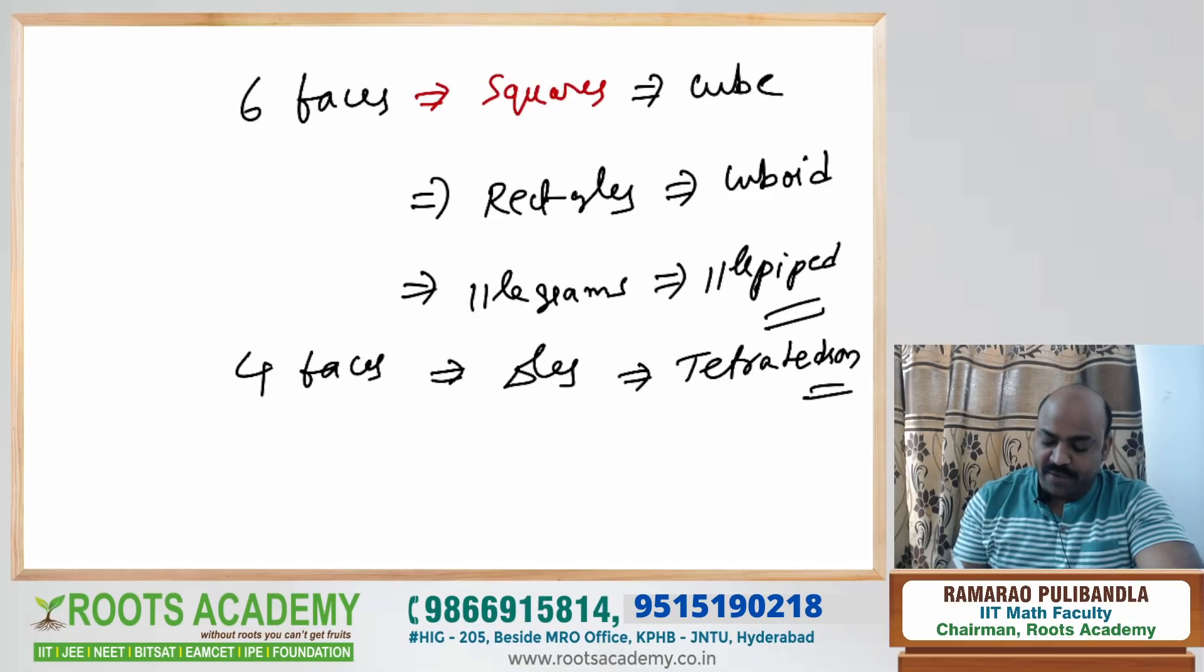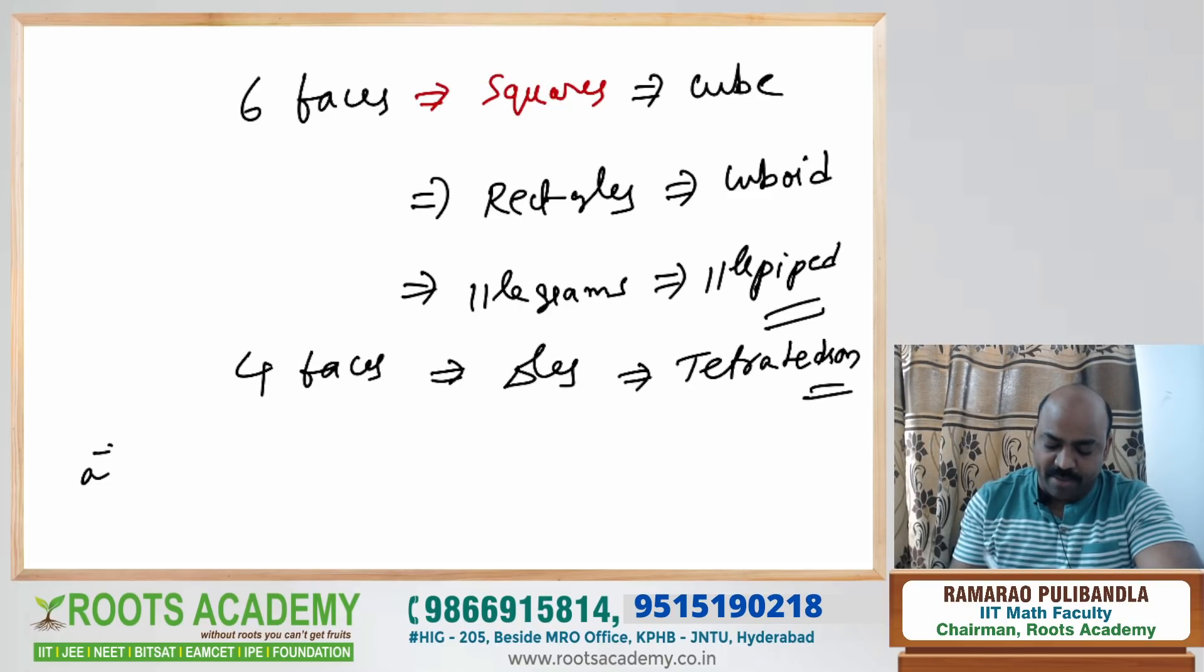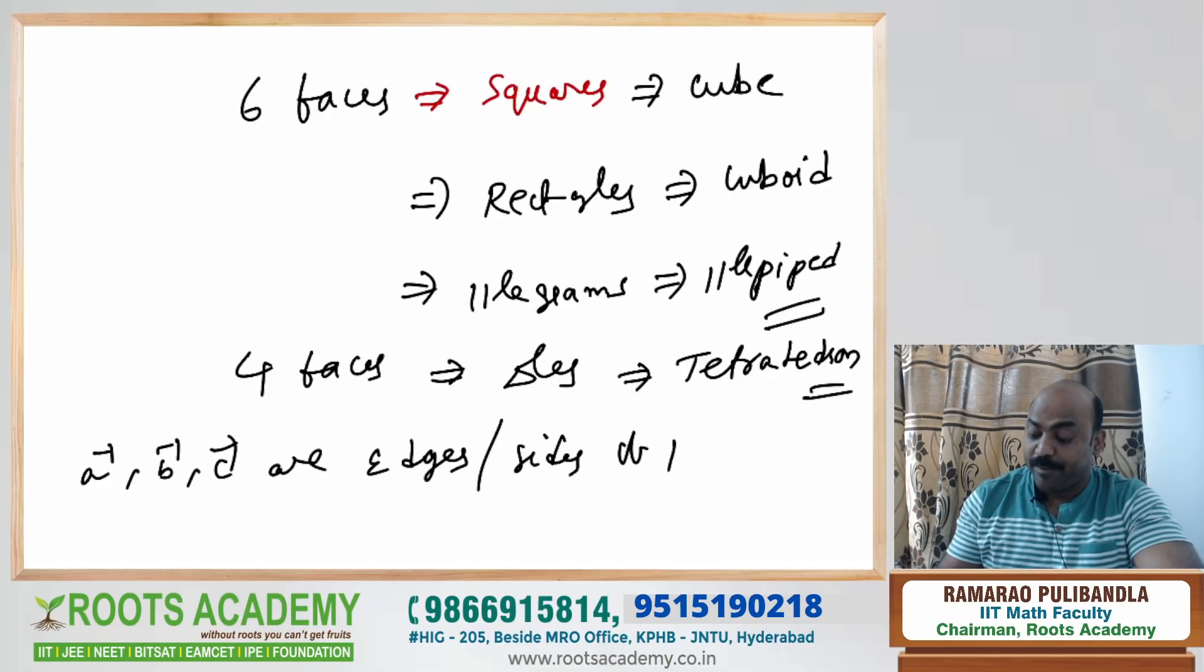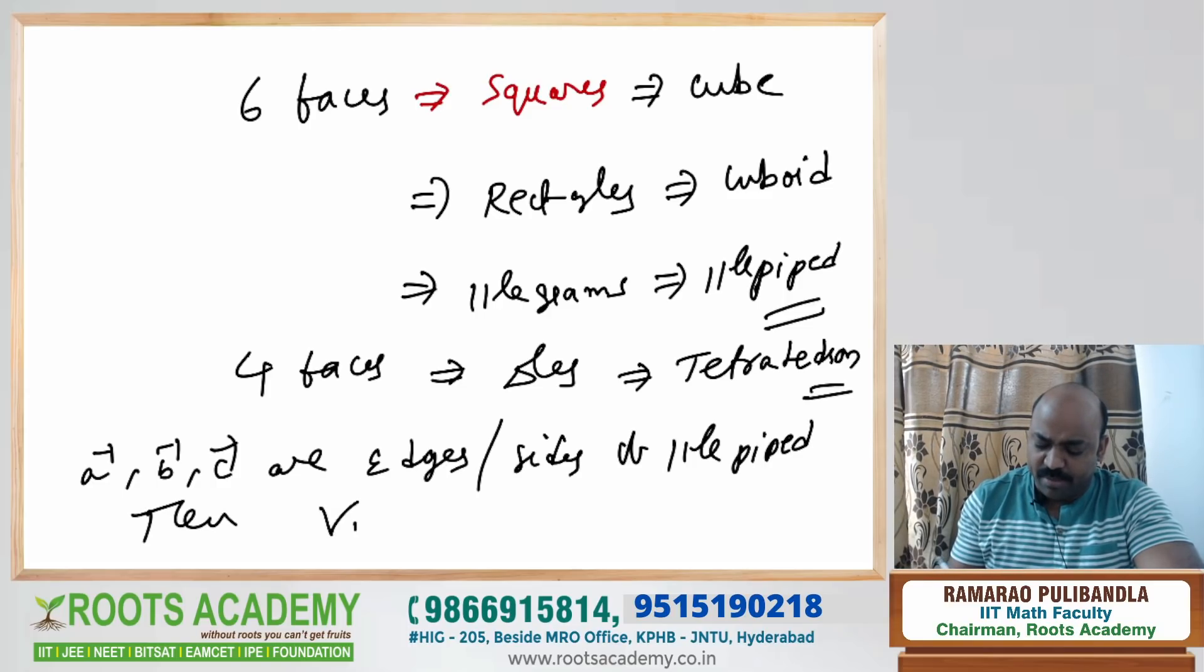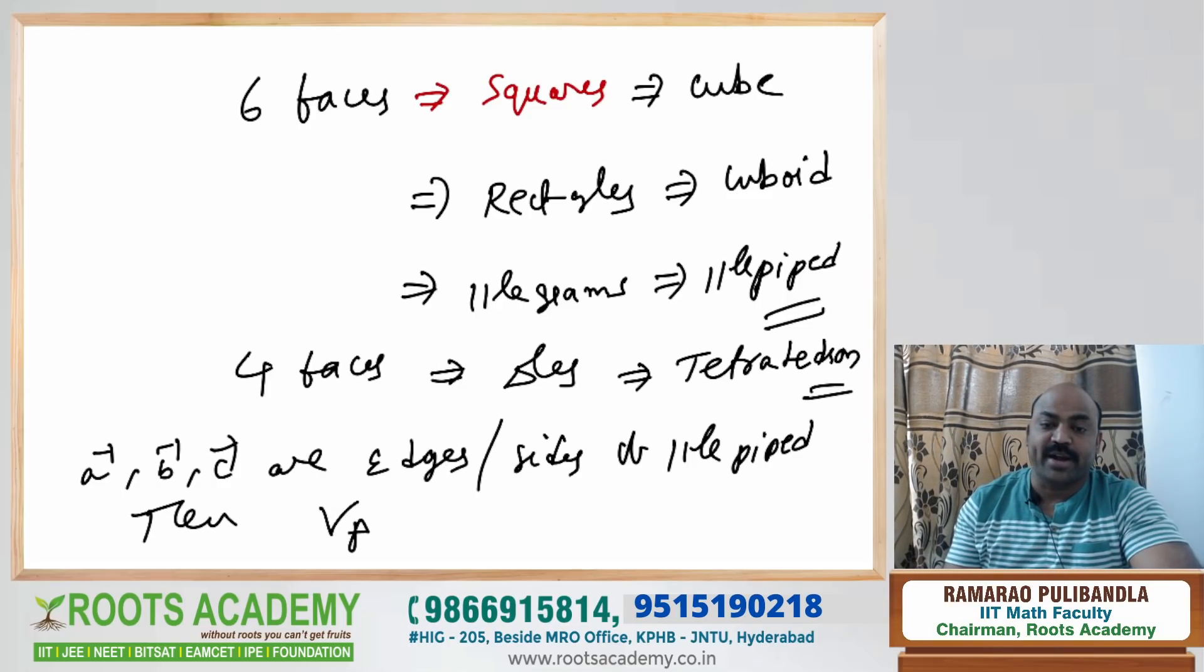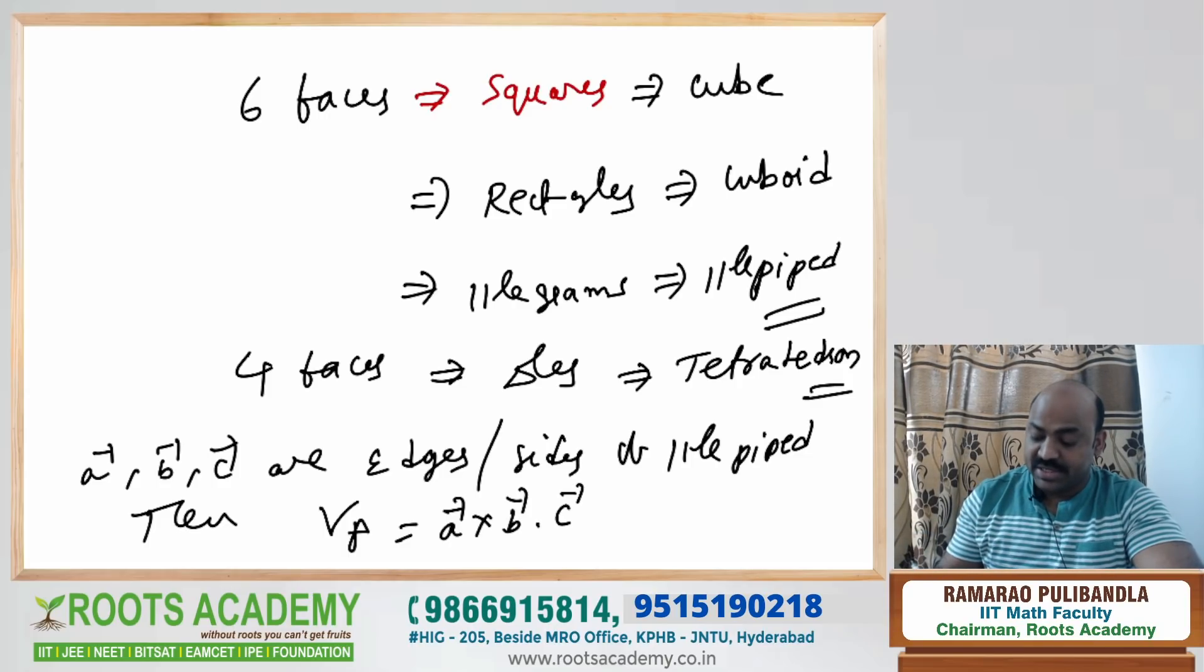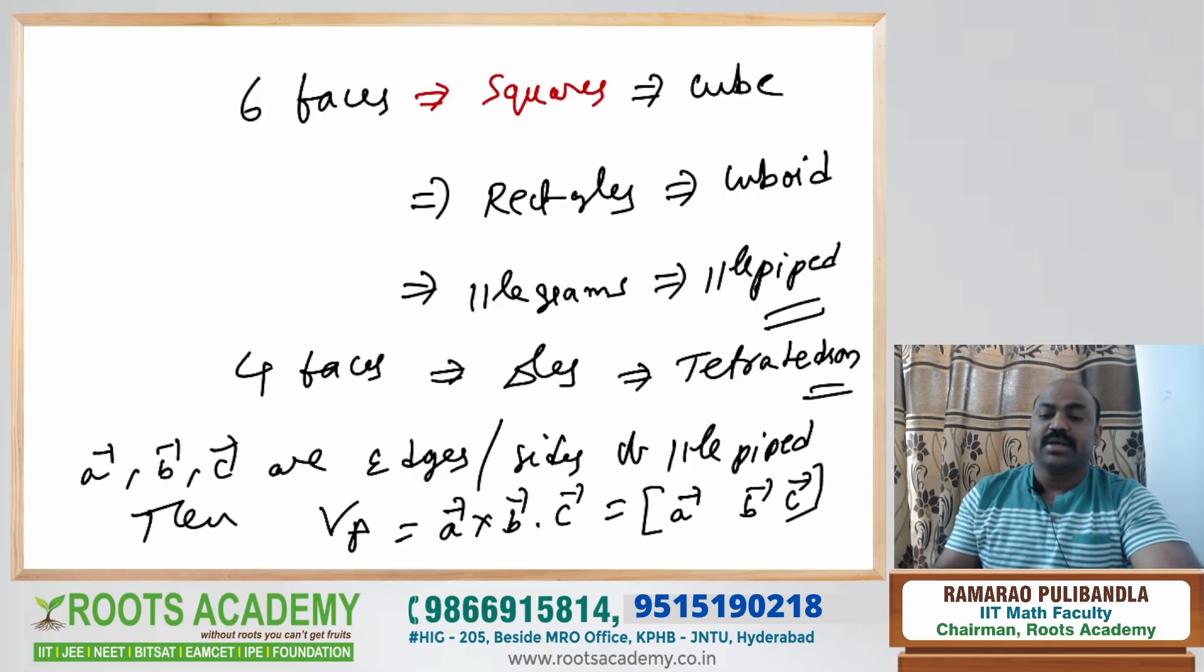So if I have a parallelogram with edges or sides a bar, b bar, c bar of a parallelepiped, then volume of parallelepiped VP is nothing but a cross b dot c. This is also called as box abc. How many of you are getting this? This is also called as box abc.